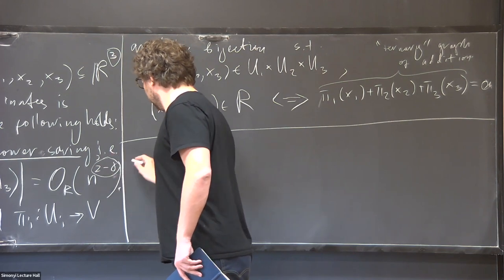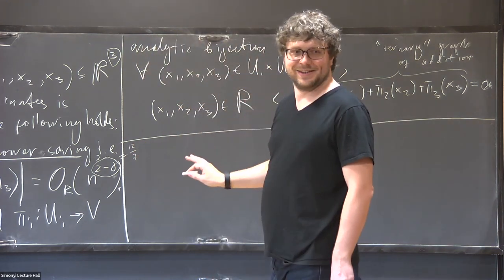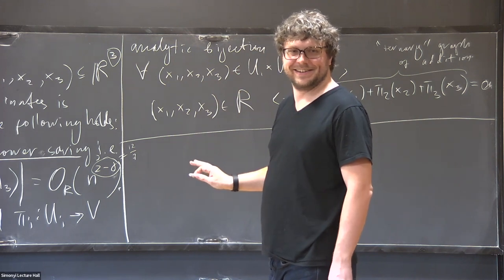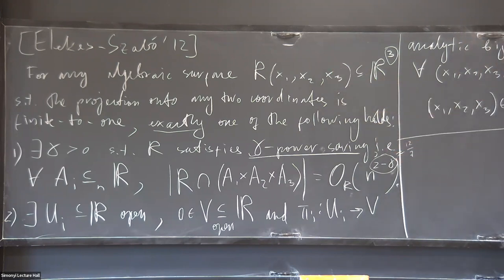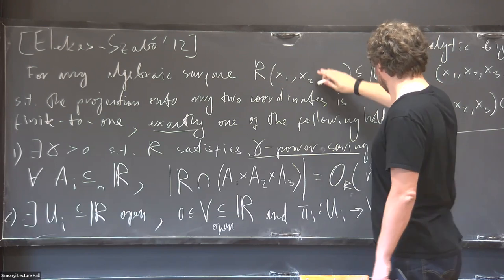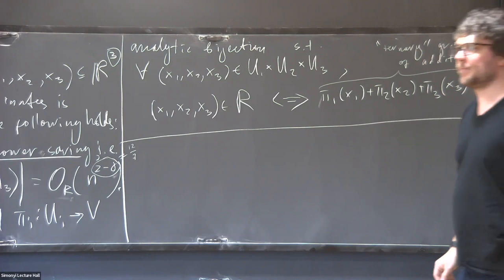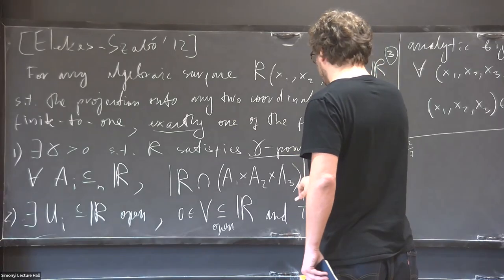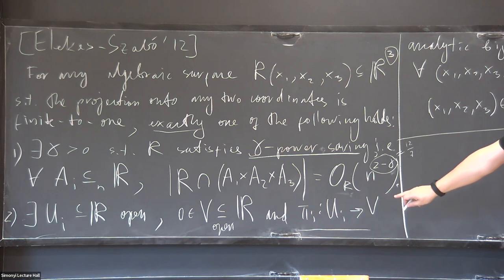The constant depends on the relation, but not the power — the power gamma does not depend on the relation. Let me clarify: the role of V is that it is a neighborhood into which all the maps π_i project.